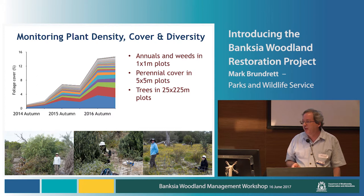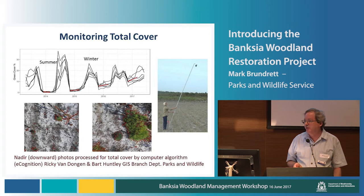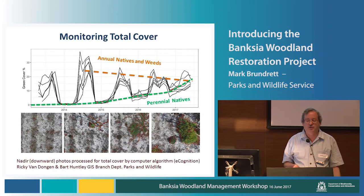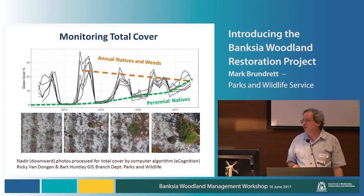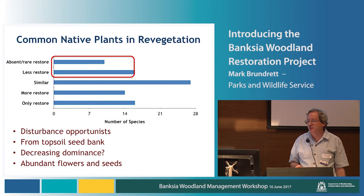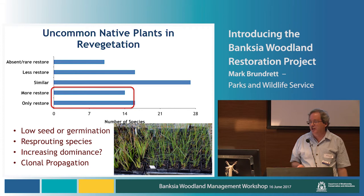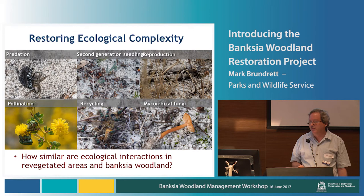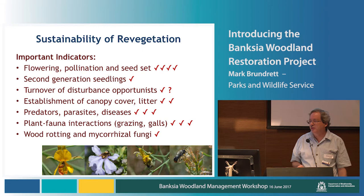We've been able to work with Ricky, Bart, and the GIS branch to develop interesting monitoring techniques. Using foliage cover calculated from photographs, we can see a trend for annual natives and weeds to decline over time, while native perennial plant cover — most obvious in summertime — increases. They've just crossed over in fact, but we still have a long way to go before we can say this system is fully sustainable. We're also seeing some signs that these sites are sustainable, such as seed set and turnover of early species, and we've been able to learn a lot about tree growth and ecological sustainability including animals and pollination.